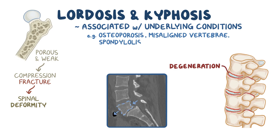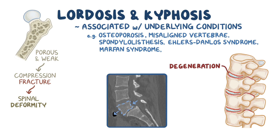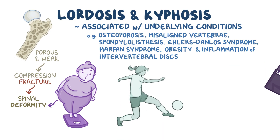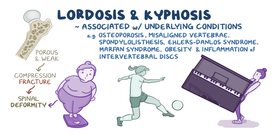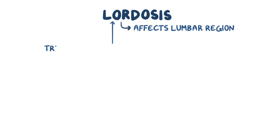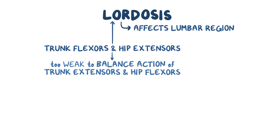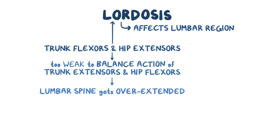Other conditions like spondylolisthesis, in which a vertebra slips out of its normal position, or conditions like Ehlers-Danlos syndrome and Marfan syndrome where bones and connective tissues overgrow, can cause spinal instability. Obesity can also put excess unbalanced weight on the spine, causing it to deform. Other causes include inflammation of the intervertebral discs, which can happen from overuse due to a sports injury or lifting weights in an inappropriate way. Lordosis typically affects the lumbar region, and can specifically result from the trunk flexors and hip extensors becoming too weak to balance the action of trunk extensors and hip flexors, causing the lumbar spine to get overextended and progressively curve inward.